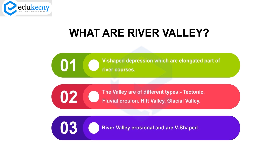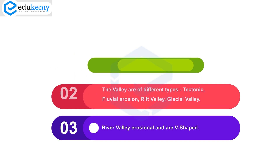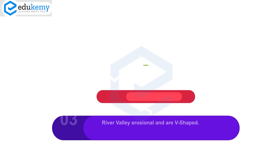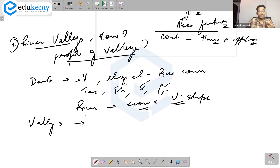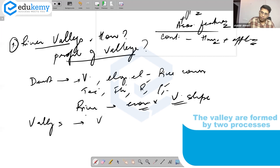Rivers can be of different types — tectonic origin, fluvial origin due to river erosion, rift valleys, or glacial valleys. Unlike tectonic and glacial valleys, river valleys are erosional and are generally V-shaped. The valleys are formed by two main processes: valley deepening and valley lengthening.